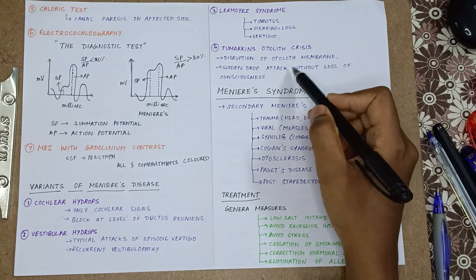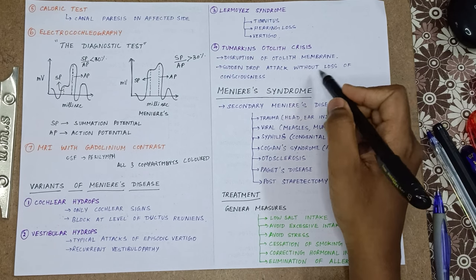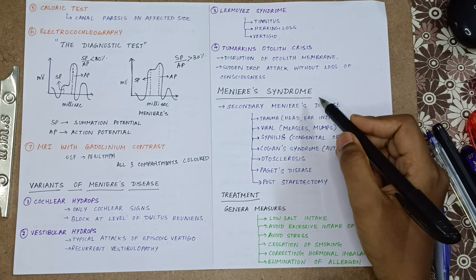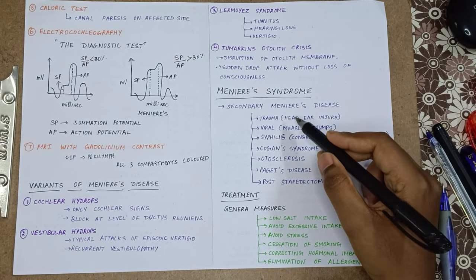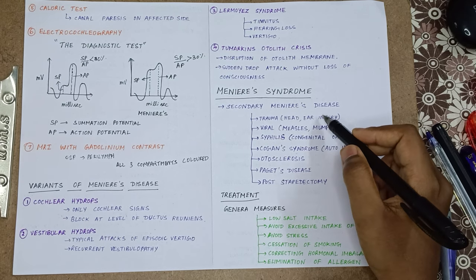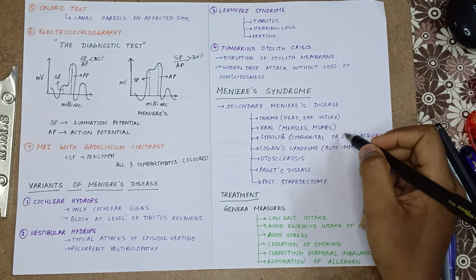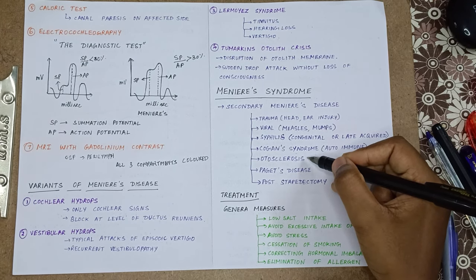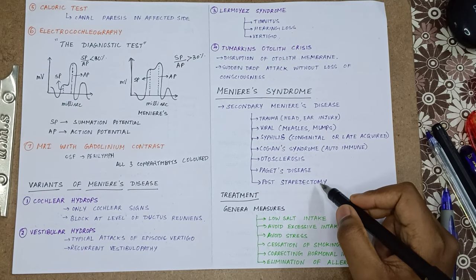The fourth variant is Tumarkin's otolithic crisis — there is disruption of the otolithic membrane, so the person suddenly falls with a sudden drop attack without loss of consciousness. Meniere's syndrome is secondary Meniere's disease caused secondary to other diseases such as trauma (head and ear injury), viral infections (measles and mumps), syphilis, Cogan syndrome (an autoimmune disease), otosclerosis, Paget's disease, and post-stapedectomy.